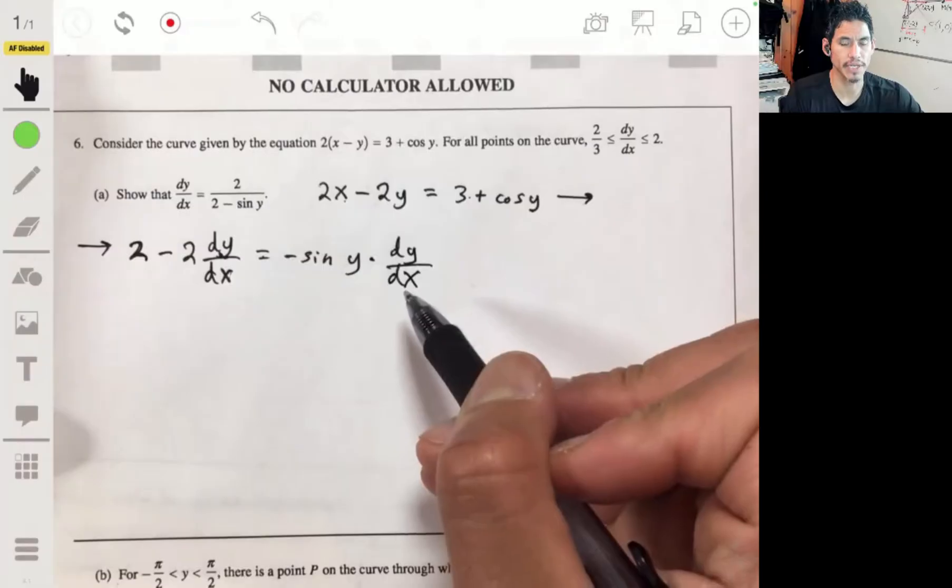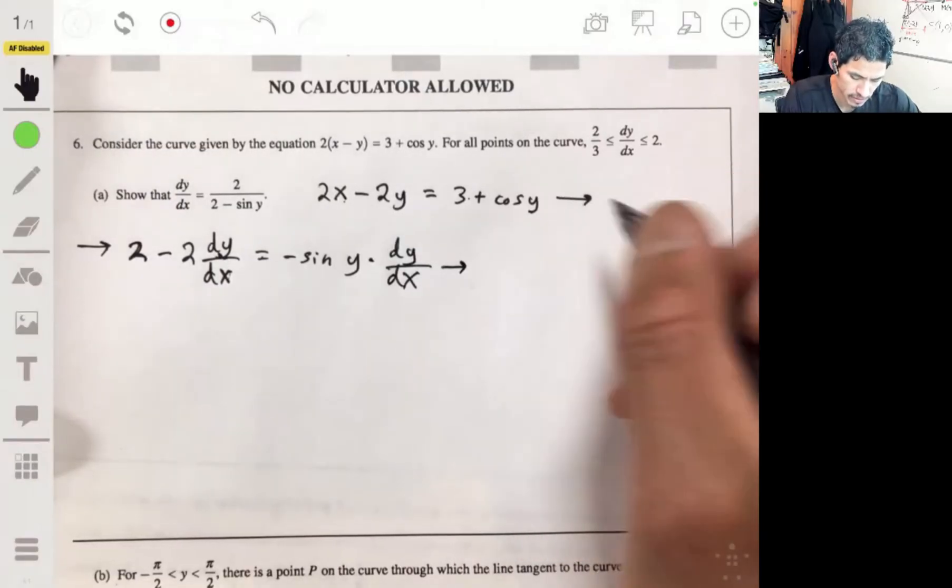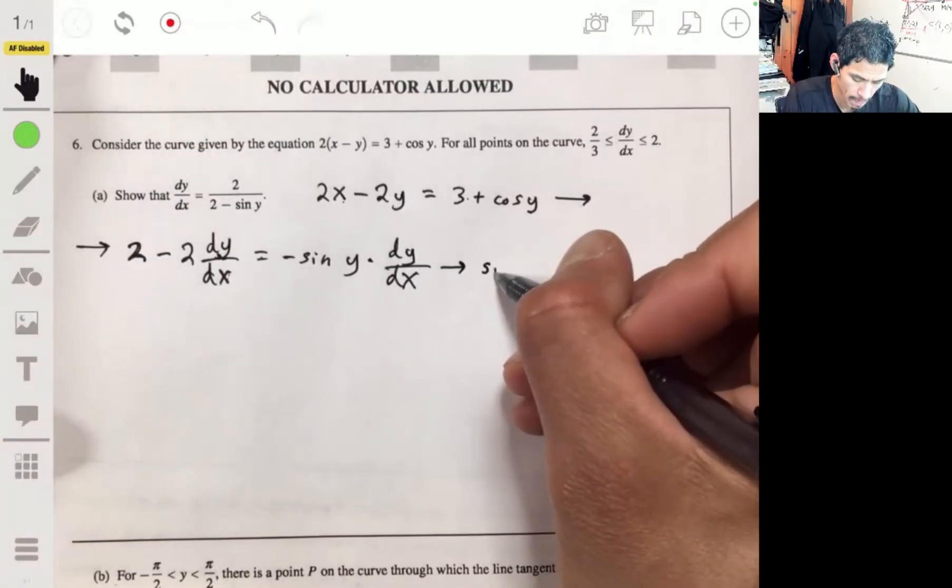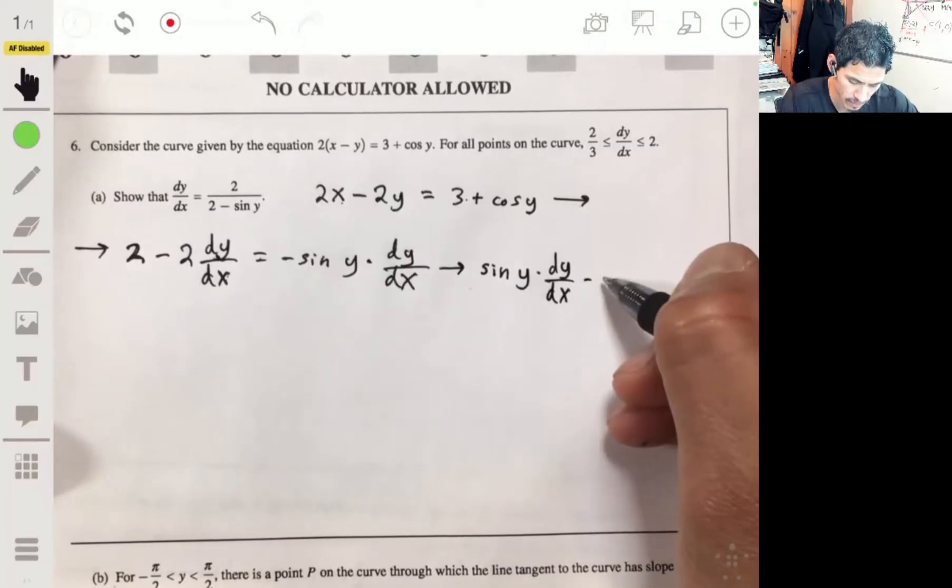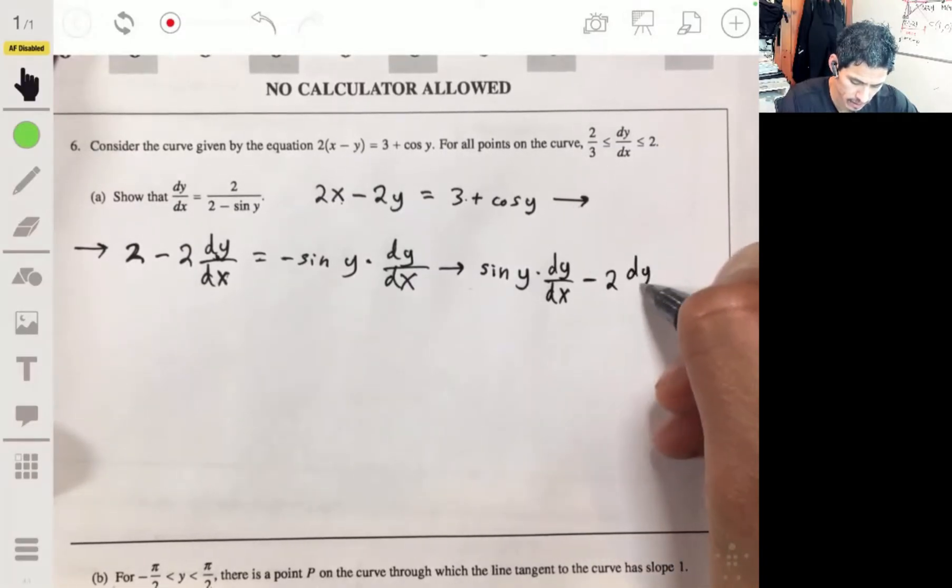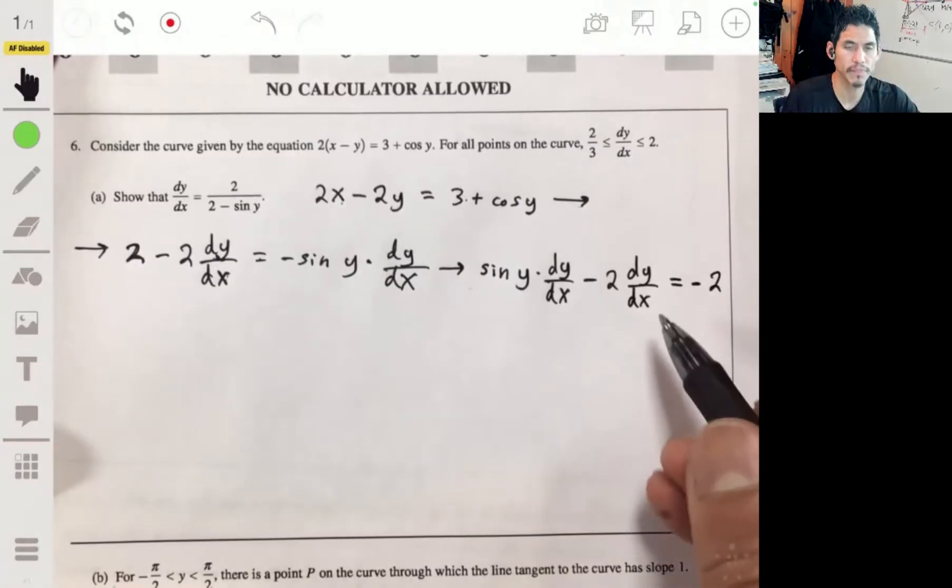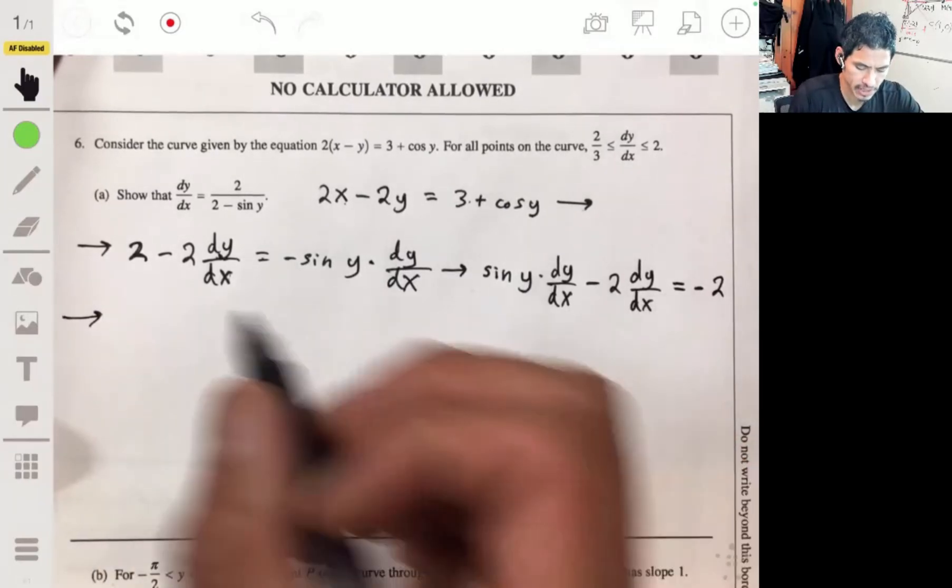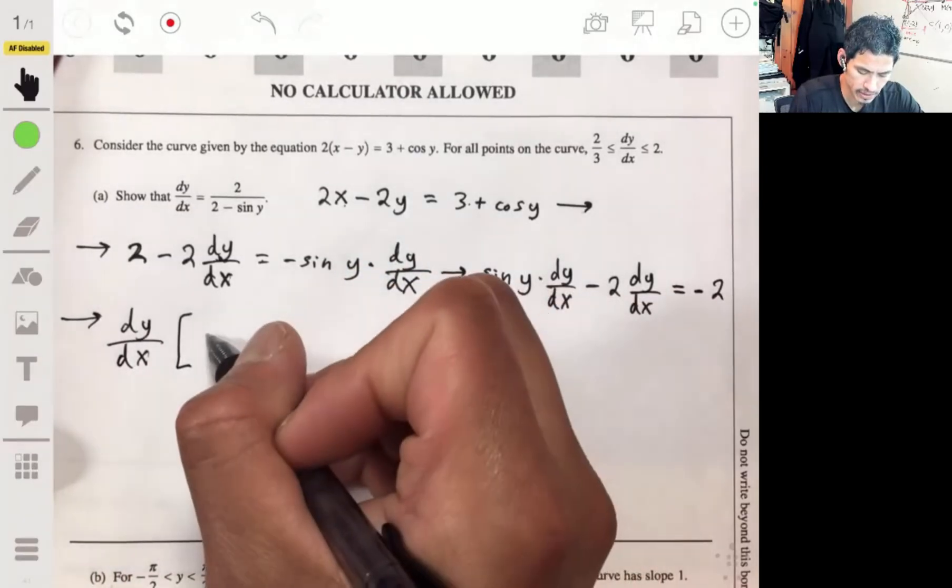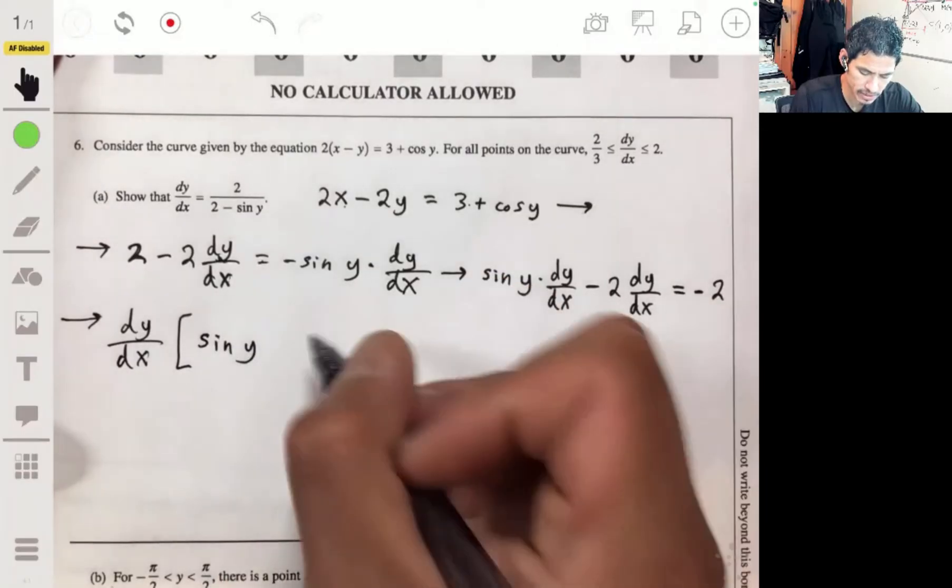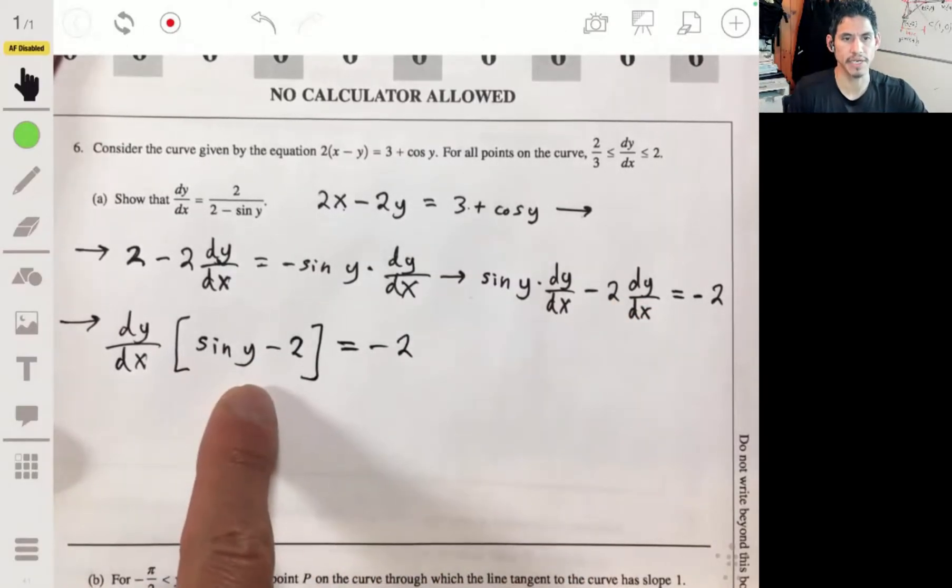And we're going to solve for dy/dx. So I'm going to add this quantity to the left and then take away two at the same time. So we'll have sine of y dy/dx minus two dy/dx equal to negative two. Factoring out dy/dx on the left, we'll get dy/dx times the sine of y minus two equal to negative two.